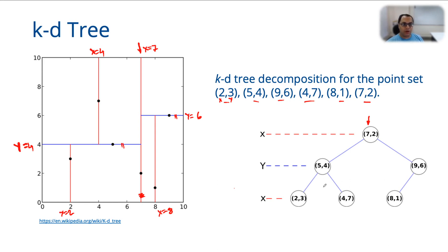That is what a KD tree is used for, and it is another example of a space subdivision algorithm in object space. Space subdivision algorithms are all in object space. That finishes our discussion of visibility algorithms in object space. In the next lecture, we will see visibility algorithms in image space, where we ask which pixels we want to finally render, instead of asking which objects occlude other objects. Thank you.